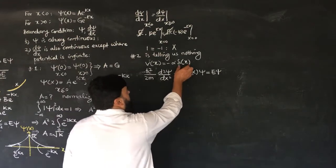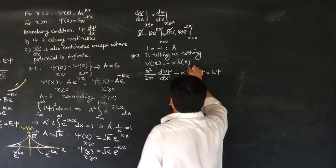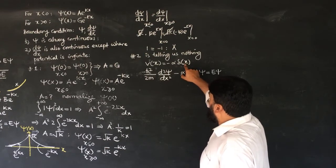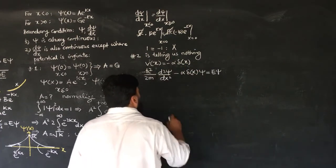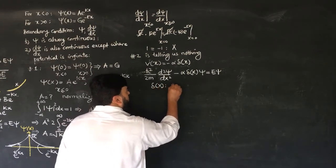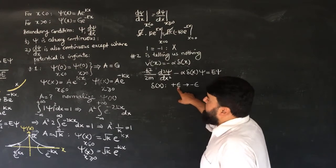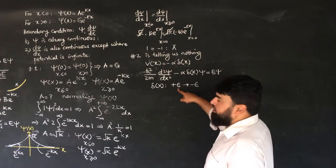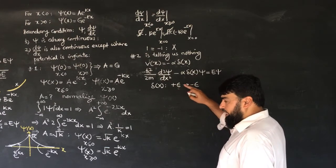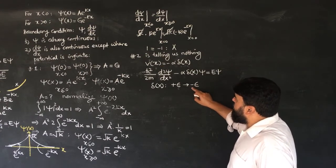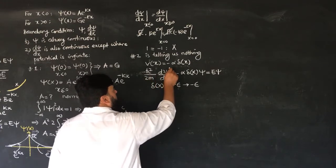For the delta potential, it is so sharply peaked that its width is effectively zero — negligible width. When we integrate it, we get 1. So I consider the integral of the delta potential from −ε to +ε. This epsilon is a very, very small number; we approximate it as something like 10^(−12), meaning 0.000000000001 — a very, very small width.